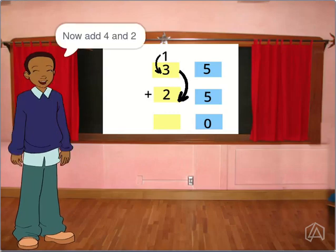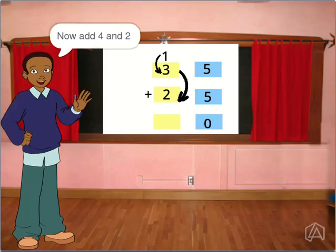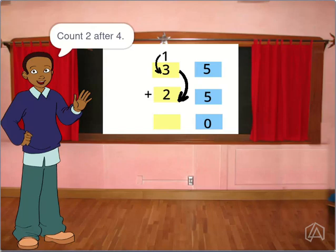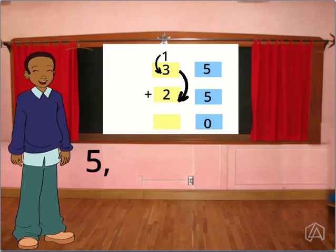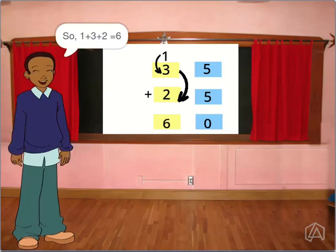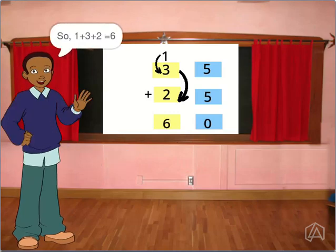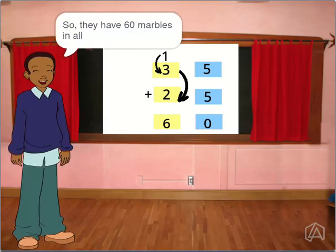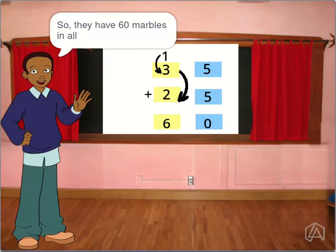Now, add 4 and 2. Count 2 after 4: 5, 6. So, 1 plus 3 plus 2 is equal to 6. So, they have 60 marbles in all.